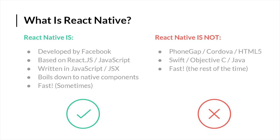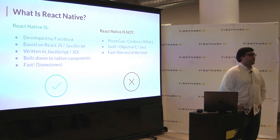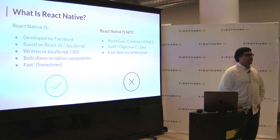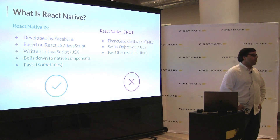So what is React Native? It was developed by Facebook. You can take basically the same coding structures and the same types of things that you do to write web code in React, and you can make a mobile app with it. It's based on React.js. You write in JavaScript, usually in ES6 — the newer, fancier stuff. You get things like generators and decorators and spread operators that you haven't had before.